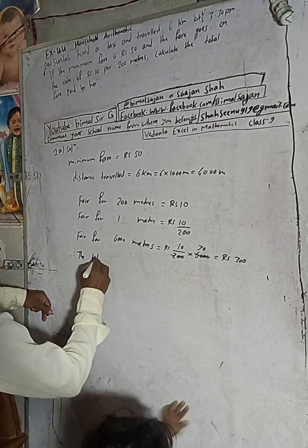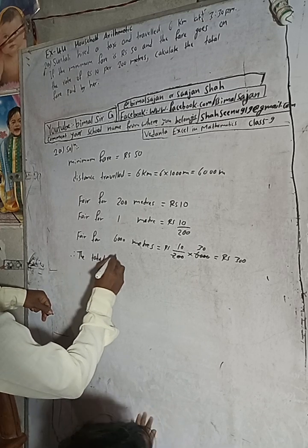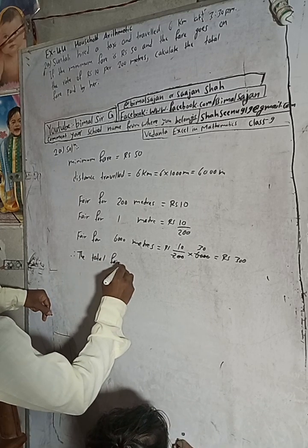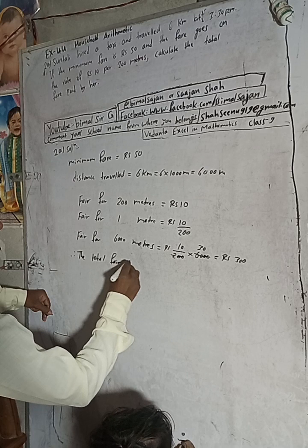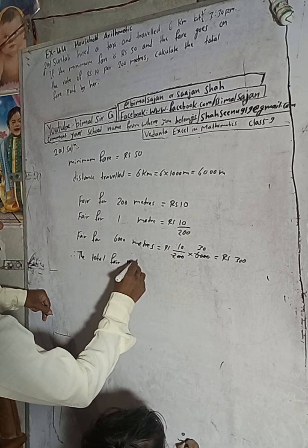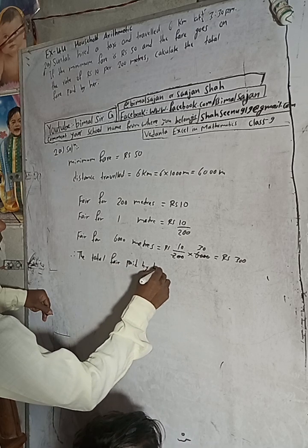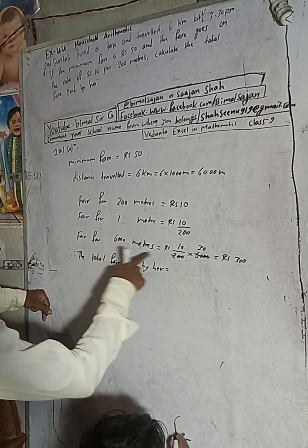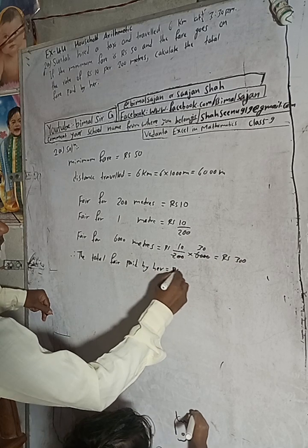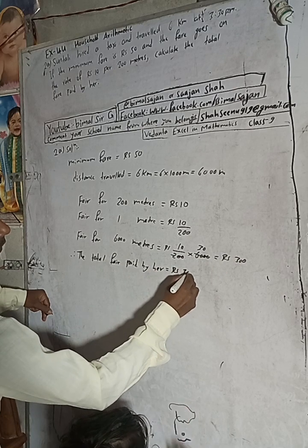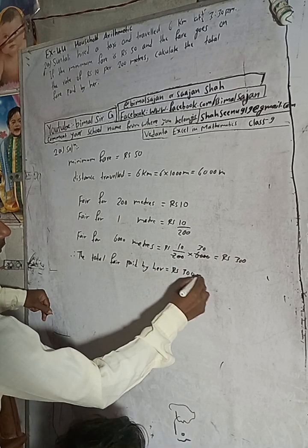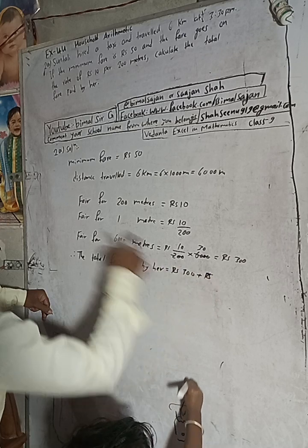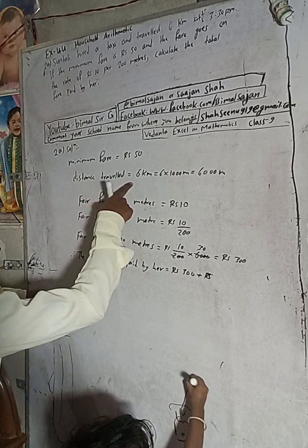Total fare paid by her is equal to the fare for 6,000 meters — which is Rs 300 — plus the minimum fare of Rs 50. So the total fare paid is Rs 300 plus Rs 50.